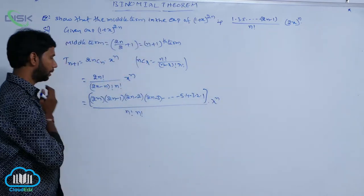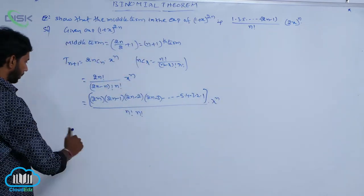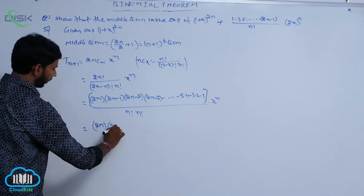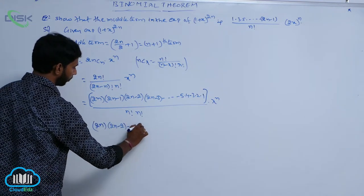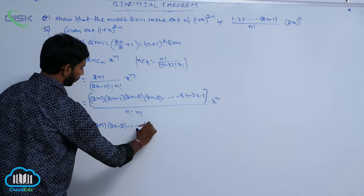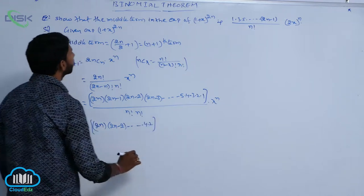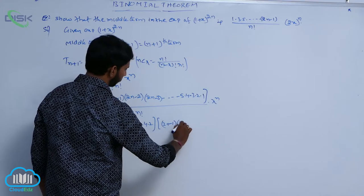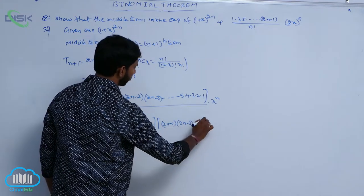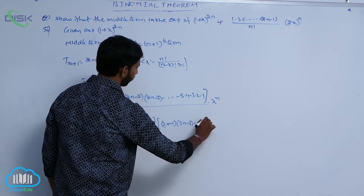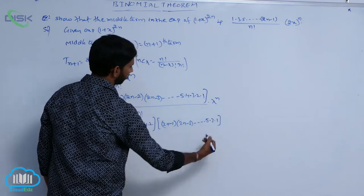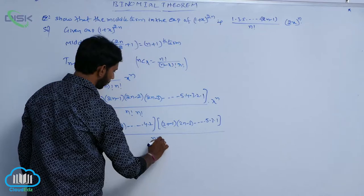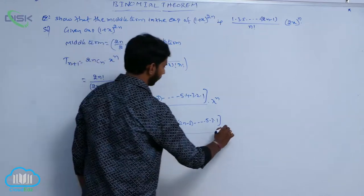Separate the even terms and odd terms. The even terms are: 2n, (2n−2), …, 4, 2. The odd terms are: (2n−1), (2n−3), …, 5, 3, 1. All divided by (n!)² · x^n.